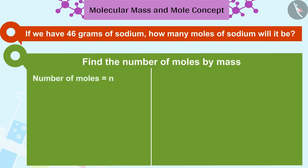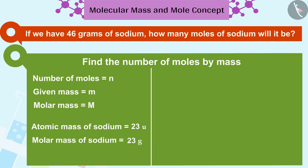Suppose the number of moles is small m. The given mass is small m and the molar mass is capital M. Now, we know that the atomic mass of sodium is 23U. This means molar mass of sodium is 23 grams.